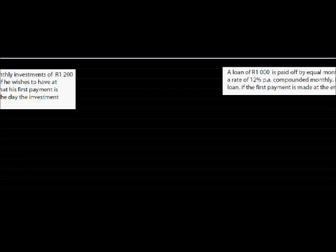More. Give me more. You ask for it. Let's look at another example. How long should an investor continue to make monthly investments of $1,200 at a rate of 12% per annum compounded monthly if he wishes to have at least $200,000 in order to buy a car cash, seeing his first payment is immediately and that his last payment is made on the day that the investment matures.